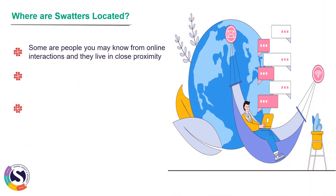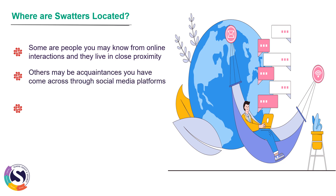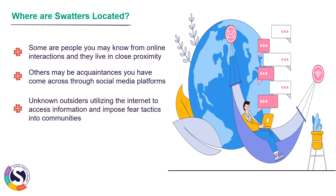Where are swatters located? Some may be people you know from online interactions who live nearby. Others might be online acquaintances on your social media platforms. However, many — especially those behind school swattings — are located overseas, using the internet to access your information and impose fear tactics on our communities.